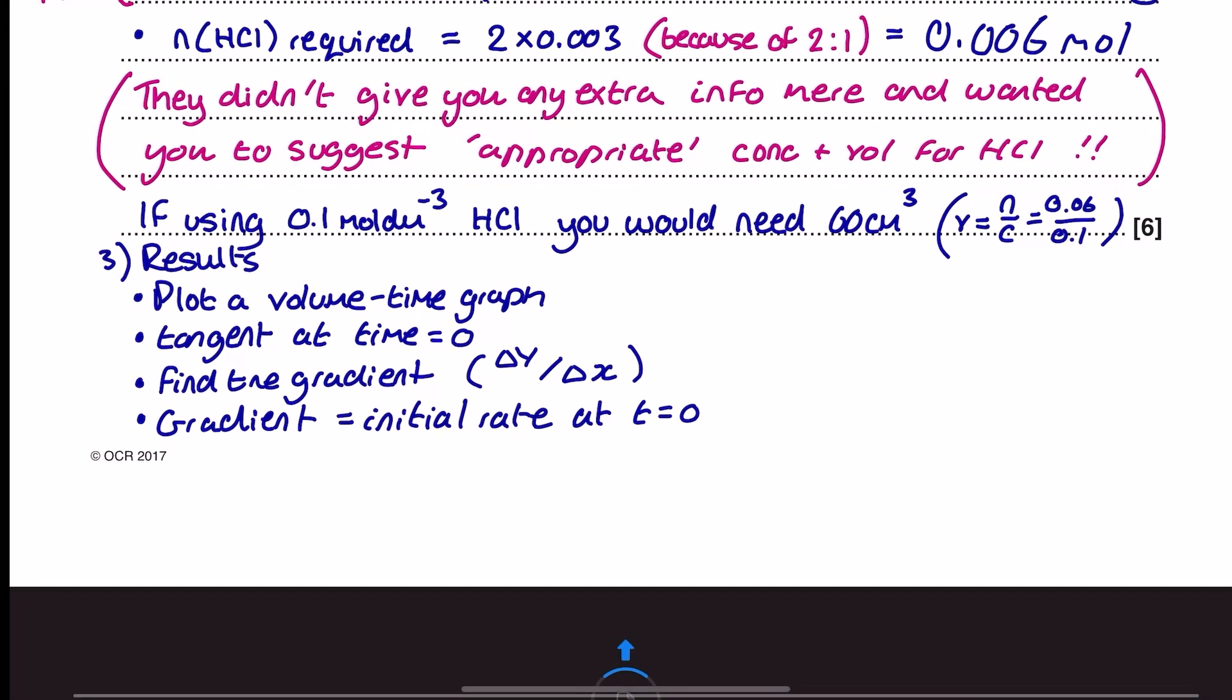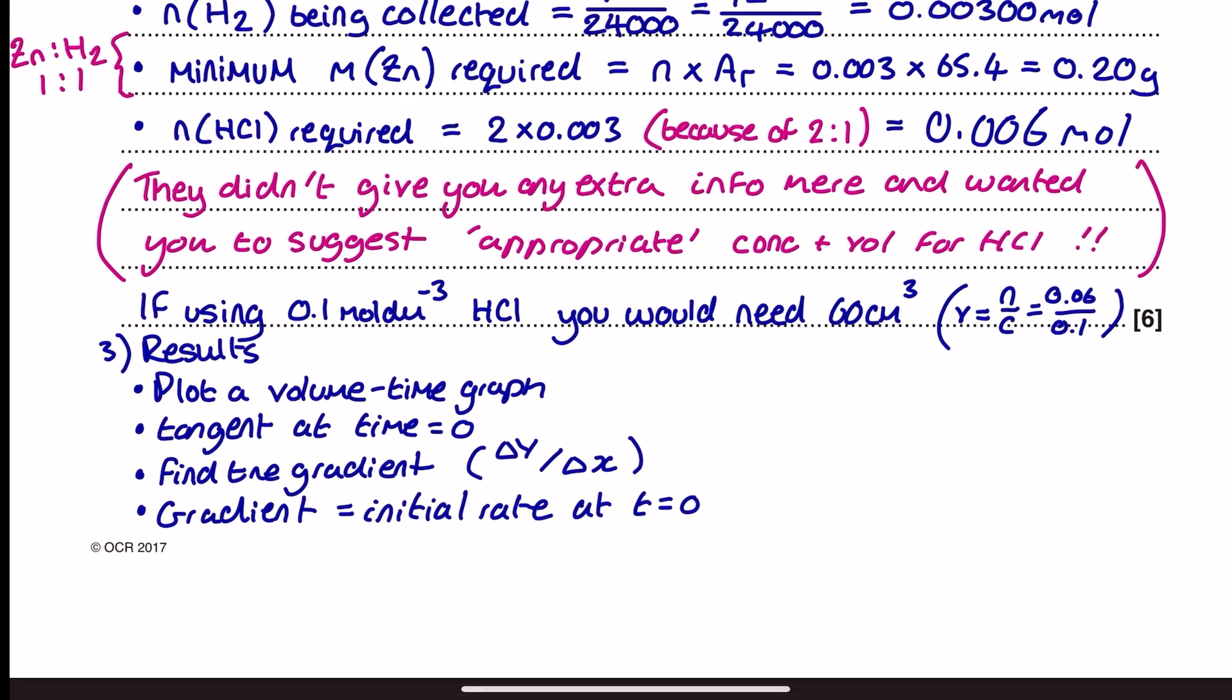Finally here, I've got to describe how I would process the results graphically. And so I'm going to plot a volume time graph. Don't say you're going to plot a concentration time graph because that's not the data you're recording. You're going to plot a volume time graph. You're going to put a tangent to time equals 0 because that's how we're going to find the initial rate of reaction. We're then going to find the gradient of that tangent, which is the change in Y divided by the change in X, and the gradient is going to be equal to that initial rate.